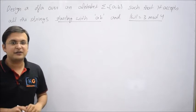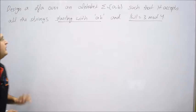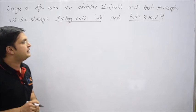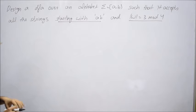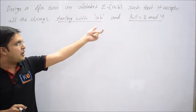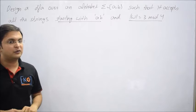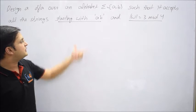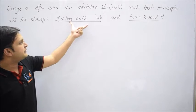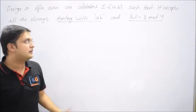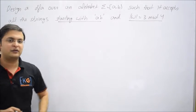Okay friends, now let's try this question. Design a DFA over an alphabet {A, B} such that it accepts all strings starting with AB and where mod(W) equals 3 mod 4. You see there are two conditions involved: first, the string must start with AB, and second, the total length must follow the pattern 3 mod 4.